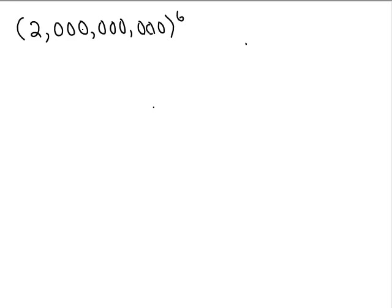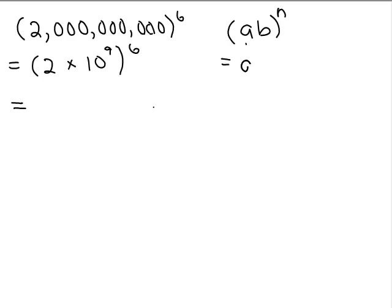Let's say we have 2 billion to the 6th power. You can't put that in your calculator because it has too many digits. But we can use scientific notation to figure out what this would be. Take the number in parentheses — 2 billion — and write it in scientific notation: that's 2 times 10 to the 9th. Then that whole thing is to the 6th power. We can use our laws of exponents: if you have AB to the nth power, you raise each thing to the nth power. So we'll have 2 to the 6th power times 10 to the 9th to the 6th power.